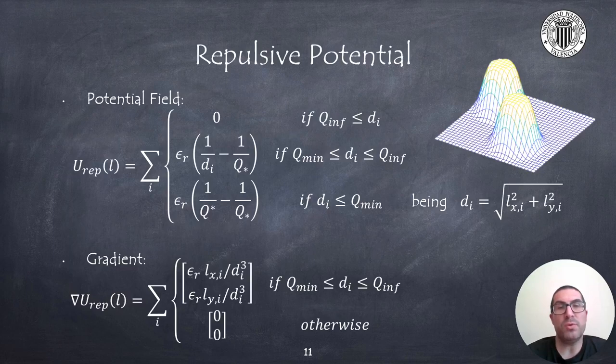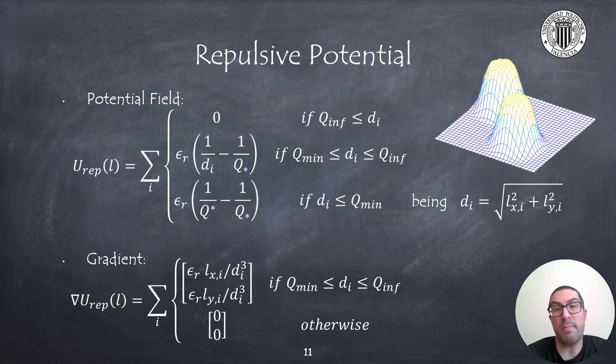To avoid obstacles we need to implement the repulsive potential function that depends on the distance to the obstacles. Therefore in this case we get those distances from the laser sensor which returns a list with X and Y coordinates of all the detected points as a set of laser beams, and we can compute the distance to each of the obstacles just simply by computing the variable d_i in the formula. The repulsive potential is affected to the robot only if the obstacle lies between an influence distance and a safe distance defined by the parameters q_inf and q_min respectively. Note that both the repulsive potential and its gradient include a summation term which means that all laser beams must be taken into account.